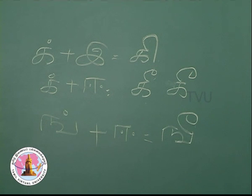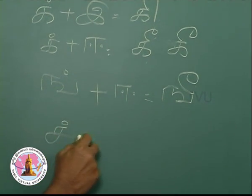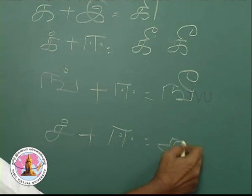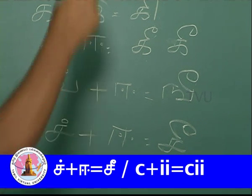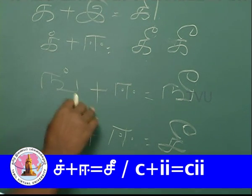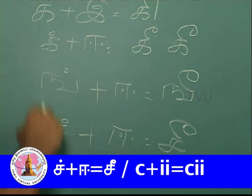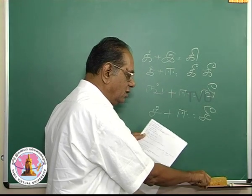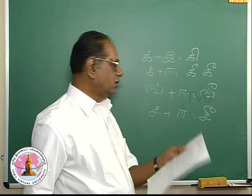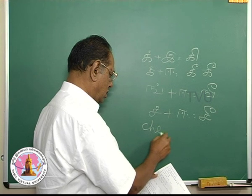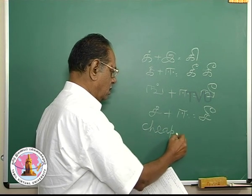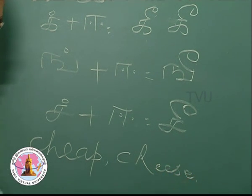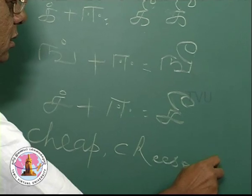The third letter is ch and ee, it becomes chee. The same method, the same sound. Ee is combined with all the consonants. This is chee, as in the words shee and sheen.